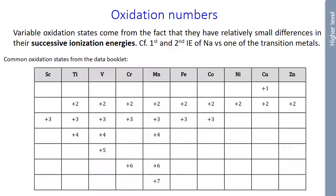So when I said variable oxidation states, it's because they have relatively small differences in their successive ionization energies. So as an example, for the first and second ionization energies of sodium versus one of the transition metals, let's consider that it's a very big difference between the first and second ionization energies of sodium compared to the transition metals.